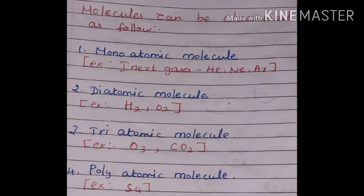A molecule which contains two atoms is called a diatomic molecule. Examples are oxygen, nitric oxide, and hydrogen. A molecule containing three atoms is called a triatomic molecule. Examples are ozone, sulfur dioxide, and carbon dioxide.